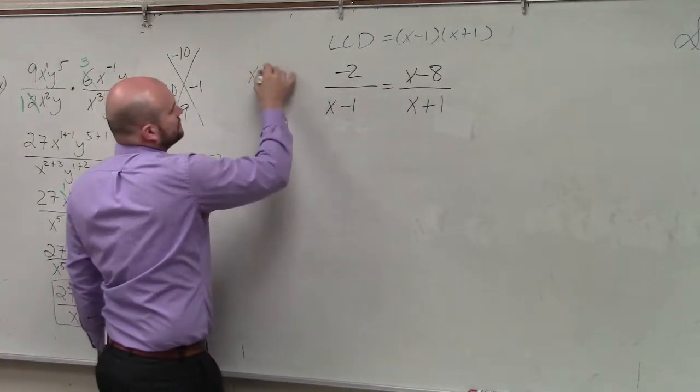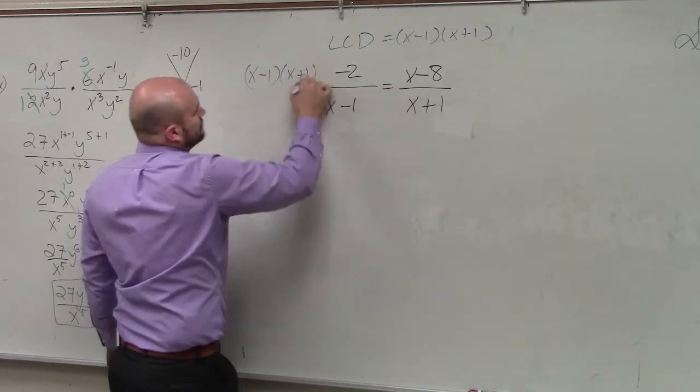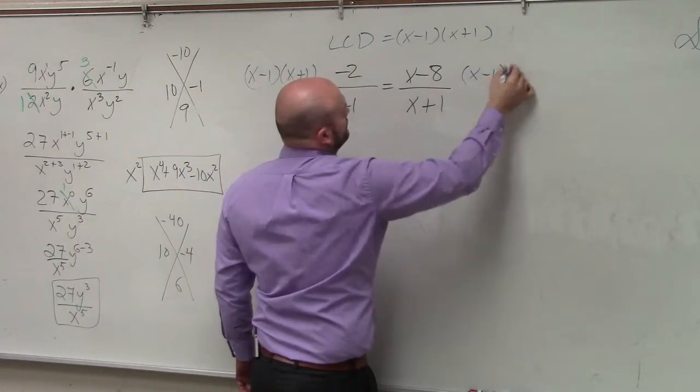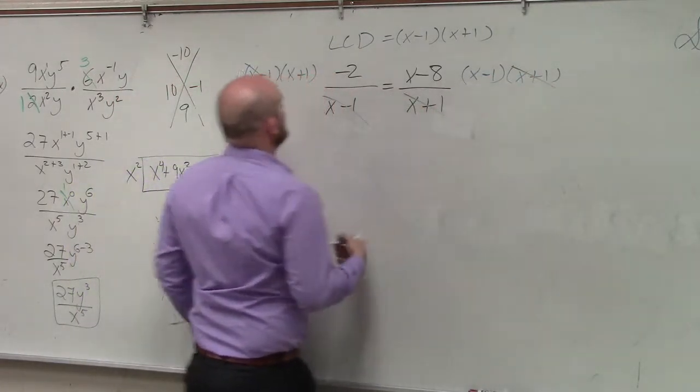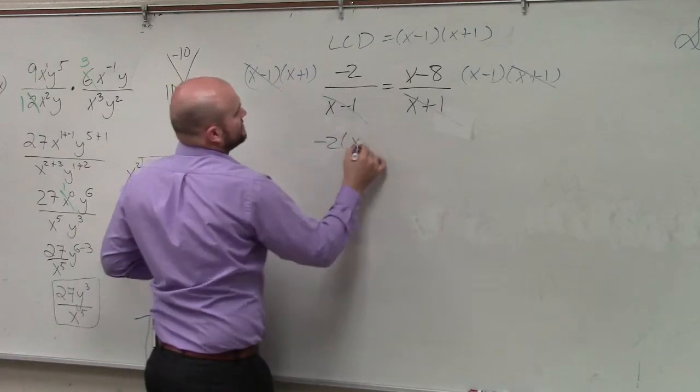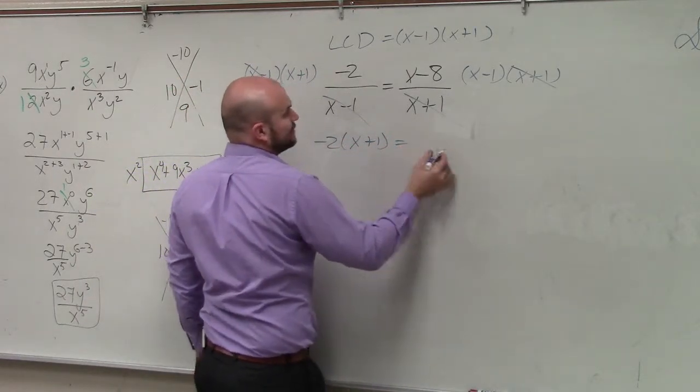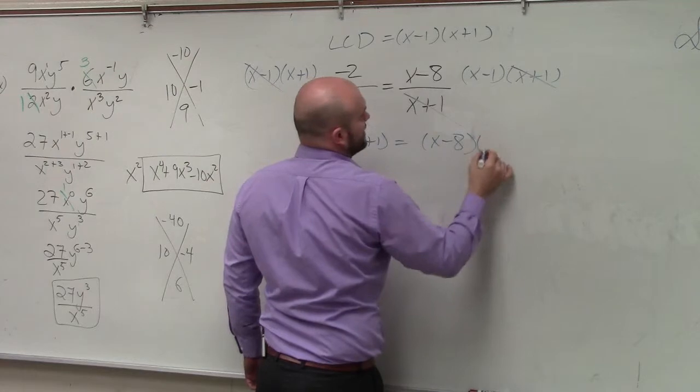So you multiply on both sides. Okay, now terms divide out. Therefore, I'm left with negative 2 times x plus 1 is equal to x minus 8 times x minus 1.